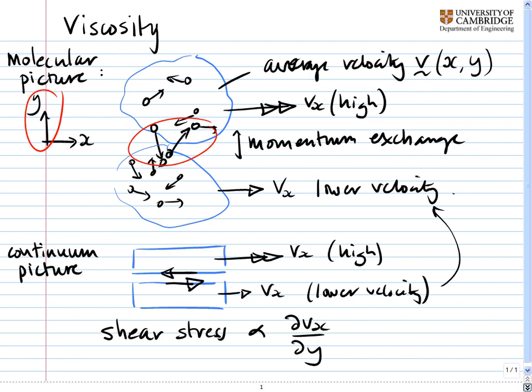And the coefficient of proportionality here is the viscosity. So let's rub that out and put in the exact value. The shear stress is equal to the viscosity times the velocity gradient. So as I've said already, essentially viscosity is a measure of how good fluids are at exchanging momentum between layers of fluids.